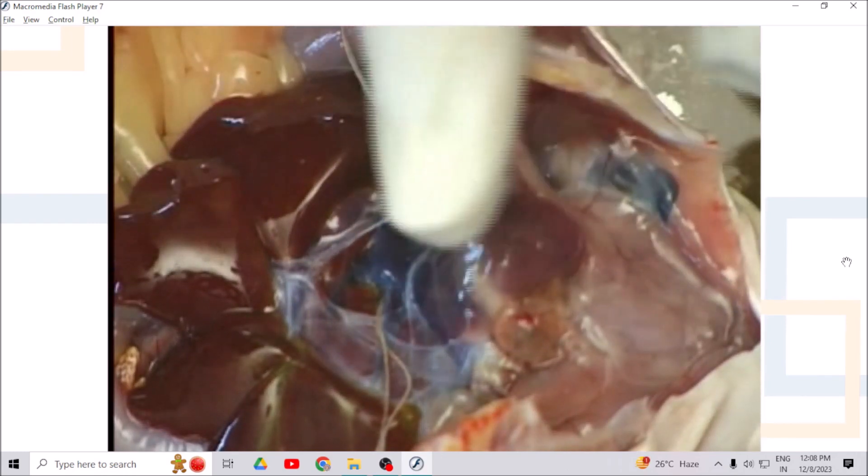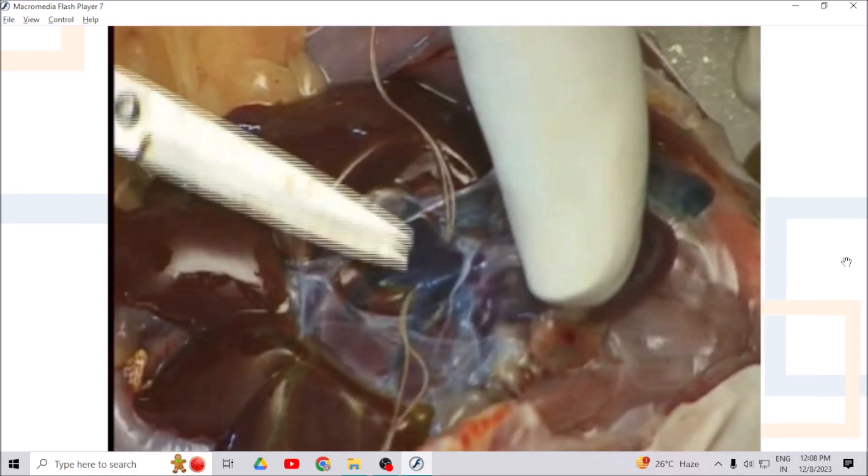Allow the heart to get drained completely of the blood. Wash the sinus portion with frog ringer solution frequently if necessary. This will avoid blood clotting and occlusion at the tip of the cannula.